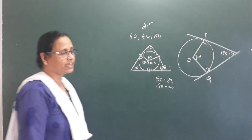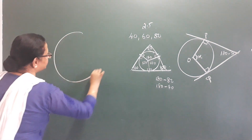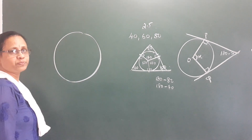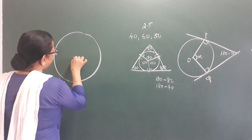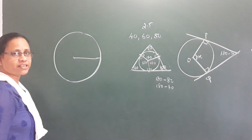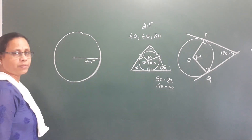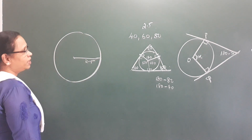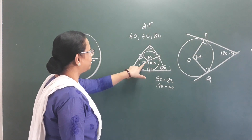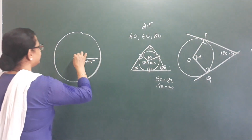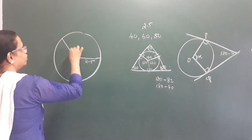How do we construct this? This is the first 2.5 cm radius — this is a circle. This is the center. This is a radius of 2.5 cm. The angles are 100, 140, and 120. This is a radius.